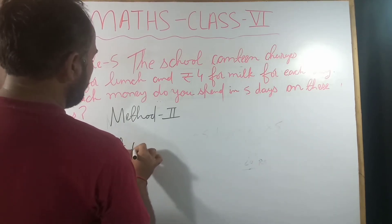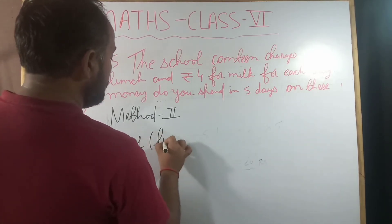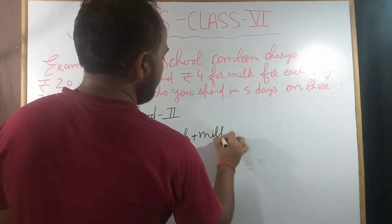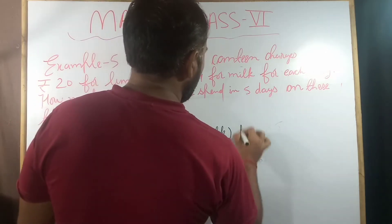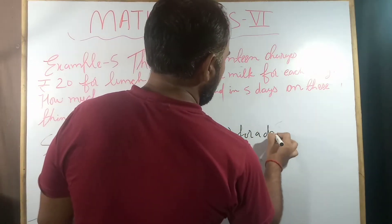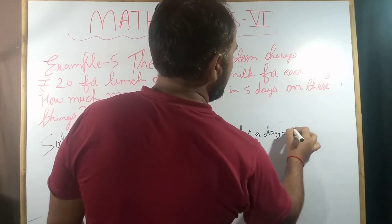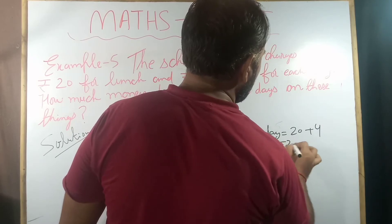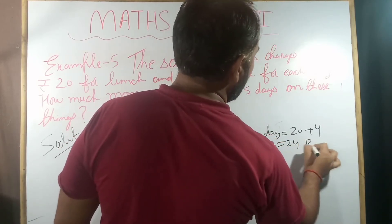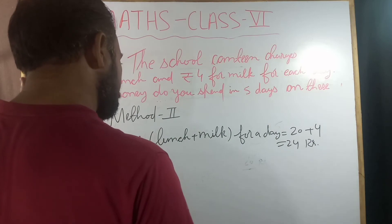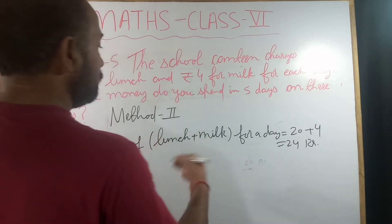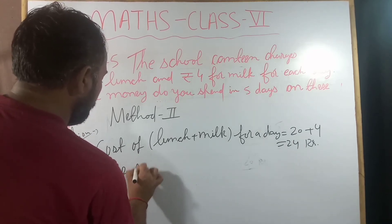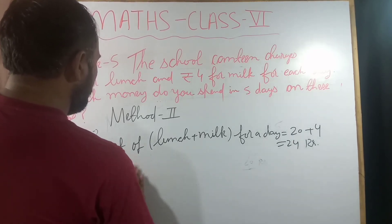In Method 2, we will first find the combined cost of lunch plus milk for one day. That is 20 rupees for lunch plus 4 rupees for milk, giving a total of 24 rupees for one day.